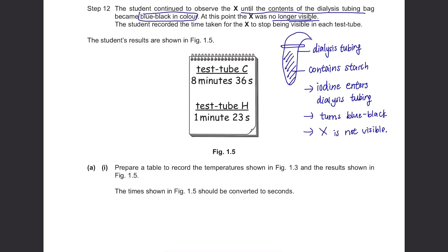The contents of the dialysis tubing turned blue-black because the iodine they put in the water will enter the dialysis tubing and in the presence of starch, iodine will turn blue-black. The student recorded the time taken for the X to stop being visible in each test tube. Basically, they are measuring the intensity of the colour by whether you can still see X or not. The student's results are shown in Figure 1.5. Test tube C: 8 minutes 36 seconds. Test tube H: 1 minute 23 seconds.